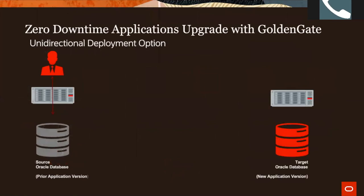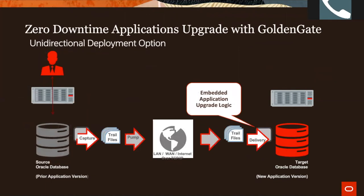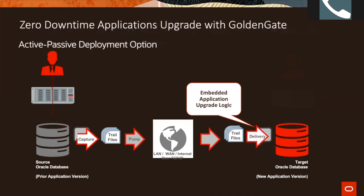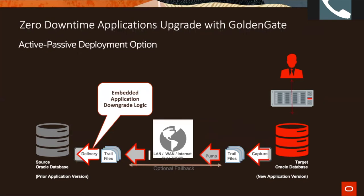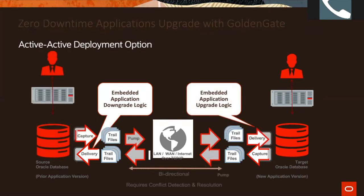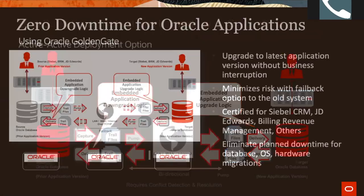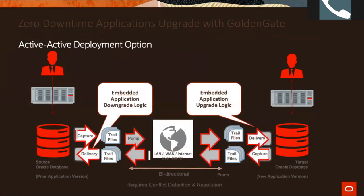The second approach is active-passive: bidirectional replication with an optional failback. It minimizes operational risk, allows the new system to be tested with production data, provides smooth low-zero downtime switchover, and includes failback in case the new system isn't ready. It does not require CDR. Slightly higher cost, less risk. The third approach is bidirectional (active-active): a dual active environment where both old and new systems are live simultaneously. It requires CDR, is the highest cost, but carries the lowest risk and enables phased migration.